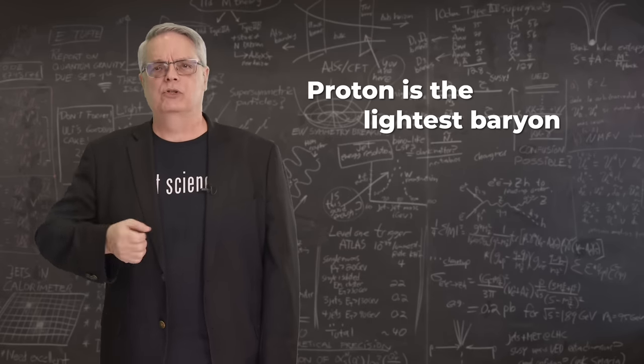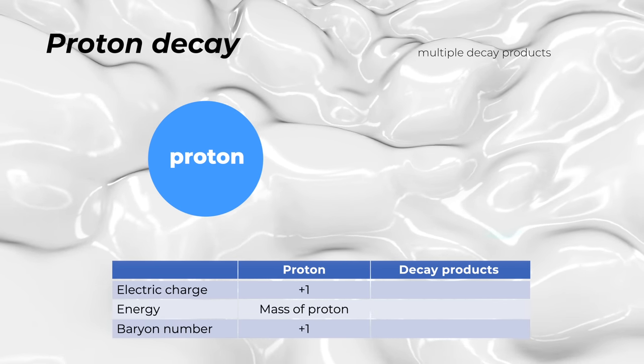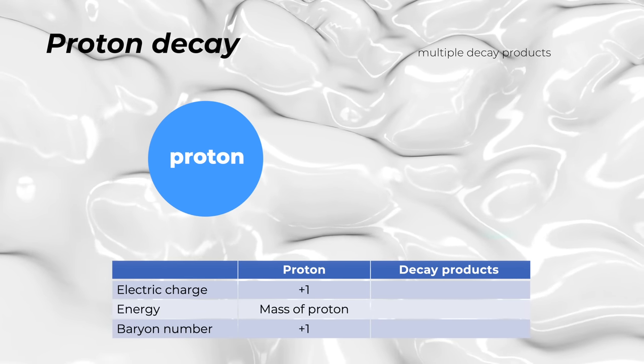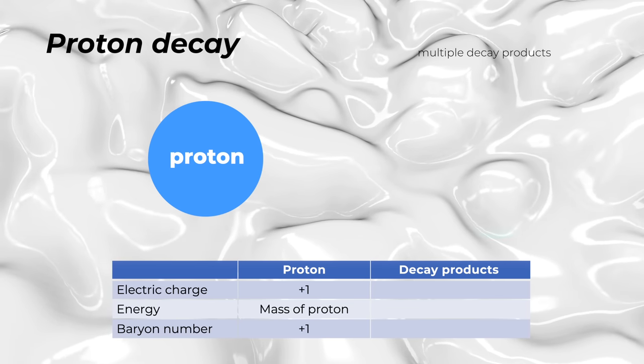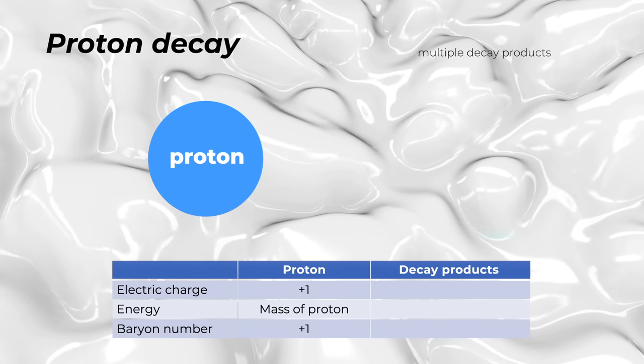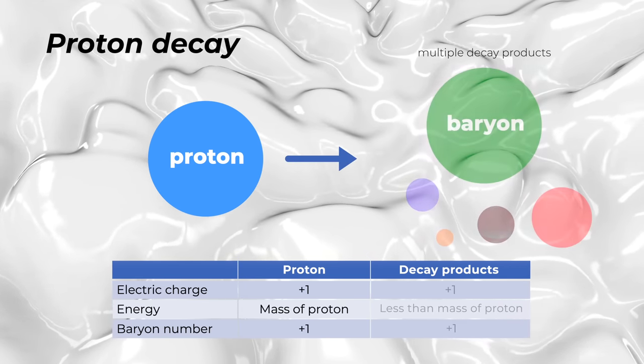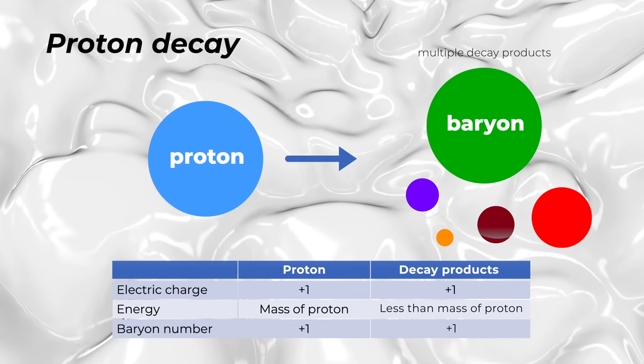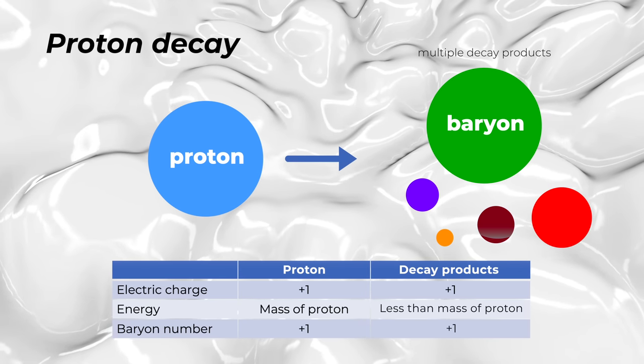So let's consider proton decay. The standard model says that any decay has to conserve electric charge, energy, and baryon number. Thus, a proton with a baryon number of plus one and a charge of plus one and a fixed mass would have to decay into some number of particles that would have to have a total mass less than a proton, a total charge equal to plus one and at least one baryon.